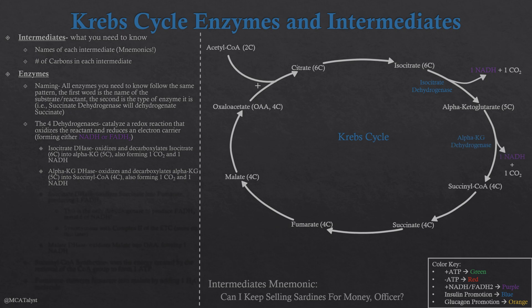The next enzyme comes immediately after and does essentially the same thing with alpha-ketoglutarate instead of isocitrate. Alpha-ketoglutarate dehydrogenase is going to be oxidizing and decarboxylating alpha-ketoglutarate into a molecule called succinyl-CoA, which is only a four-carbon molecule. In doing so it produces one NADH as well as releasing that second carbon dioxide. This is the last decarboxylation reaction — there are only two in the Krebs cycle, and they occur at these first two enzymes you need to know.